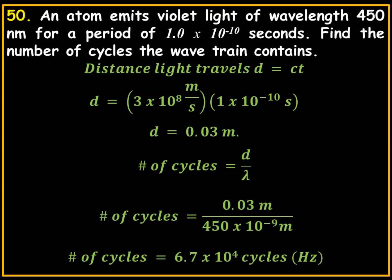So you get 0.03 meters divided by 450 times 10 to the negative 9th meters, which is 450 nanometers. And you get 6.7 times 10 to the 4th cycles or hertz as the final answer.